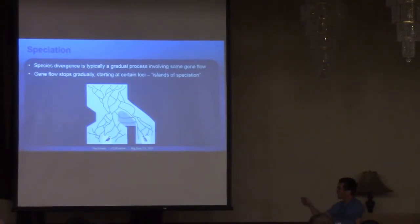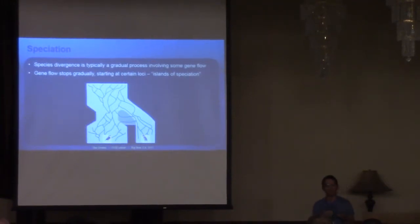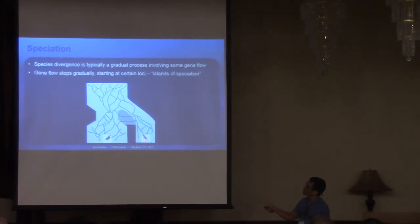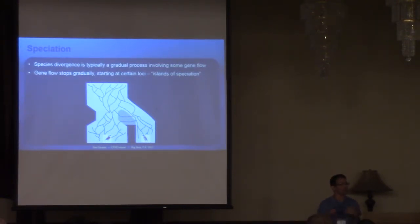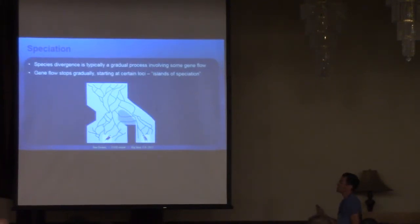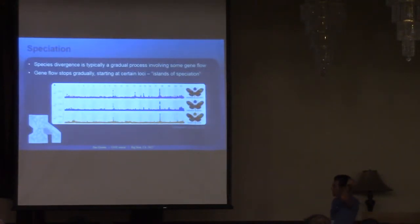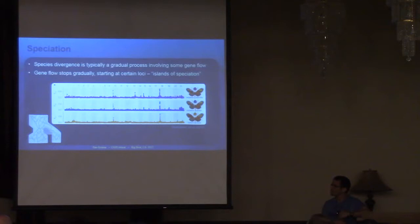We have to consider this continuing gene flow for a certain time. The interesting question is: we think about this process as some continuing gene flow for a certain period, and then at some point these two separate populations reach a level of divergence where exchanging genes no longer works — offspring fitness is too reduced and they're selected out of the population. We're interested in understanding how this process happens. There are some signs showing it's not completely gradual and that something is directing this halting of gene flow between speciating groups.